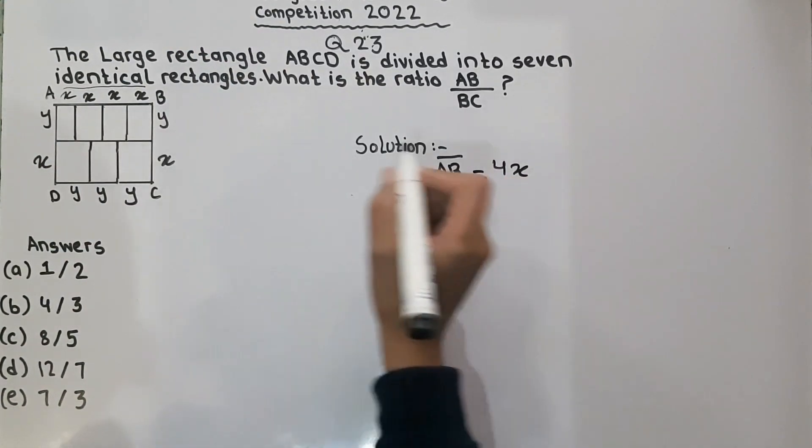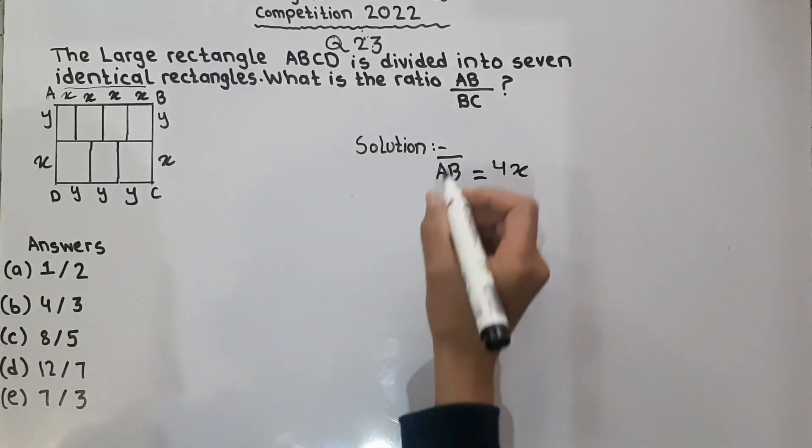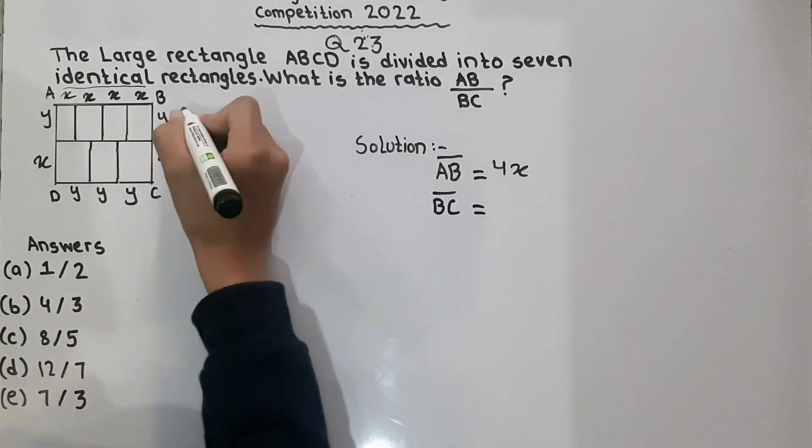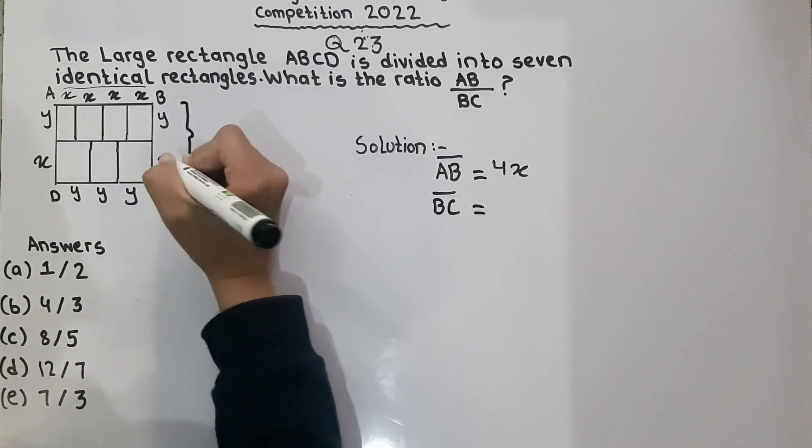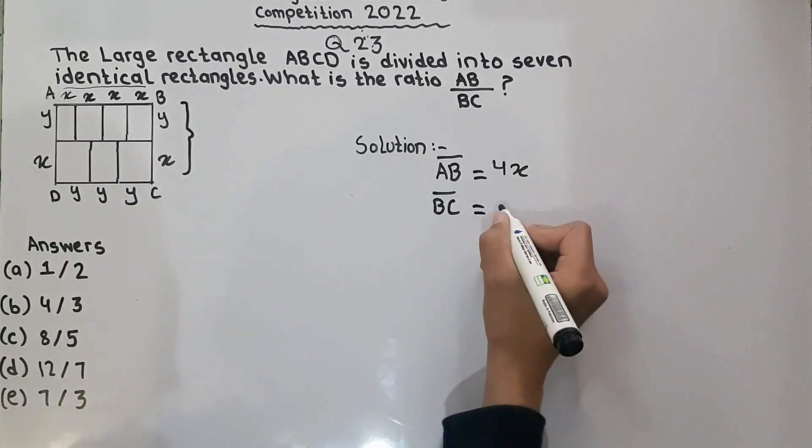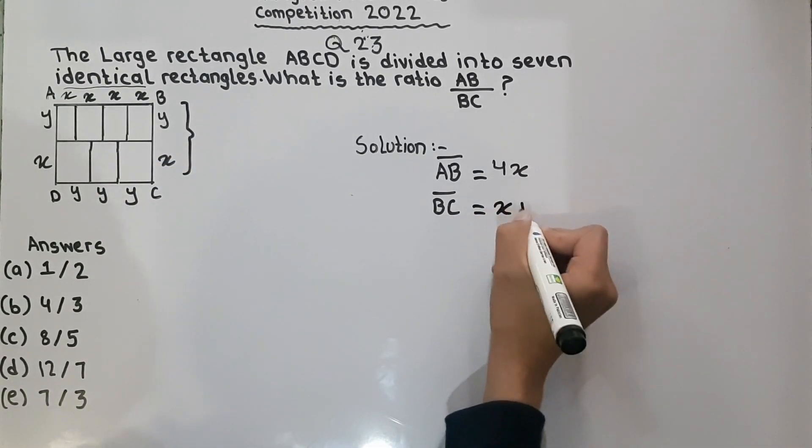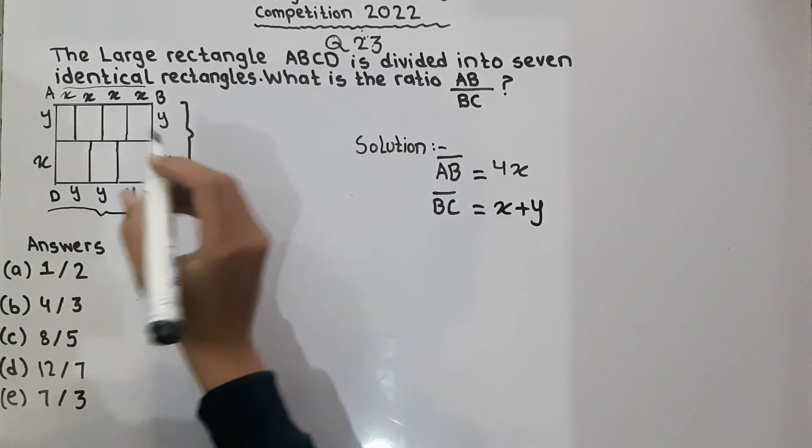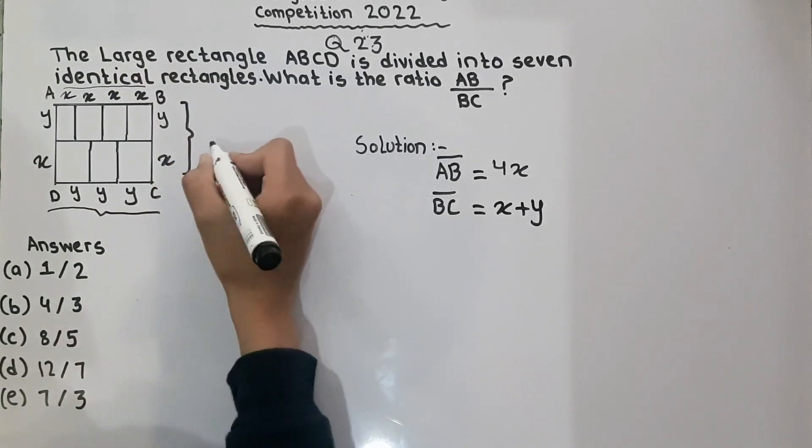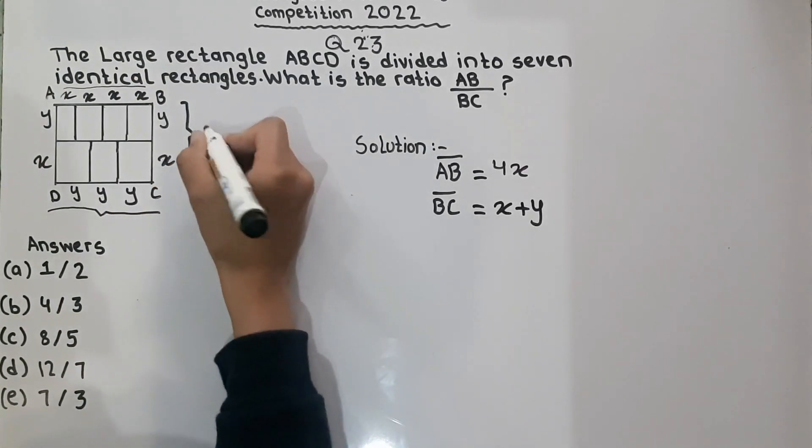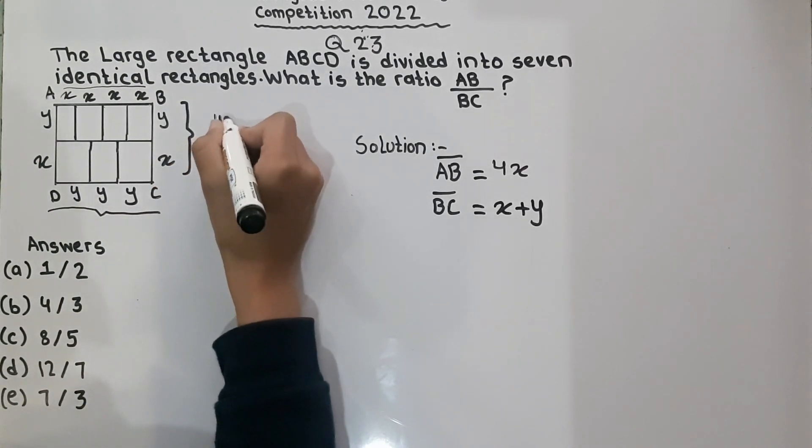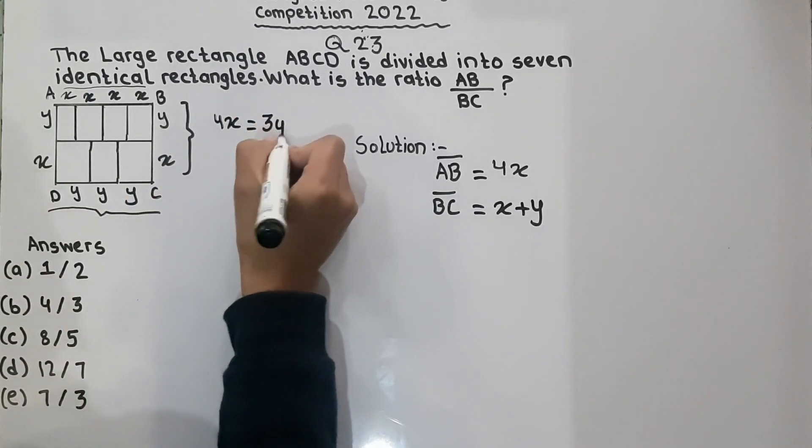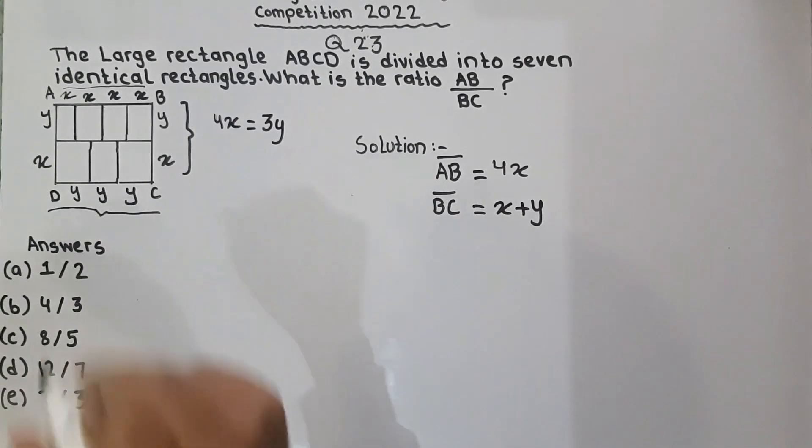AB is equal to 4X and divided by BC. And BC is equal to this. This is BC. And this is equal to X plus Y. And this also establishes a relationship between them which is 4X is equal to 3Y. We will use it after some time because it will help us.